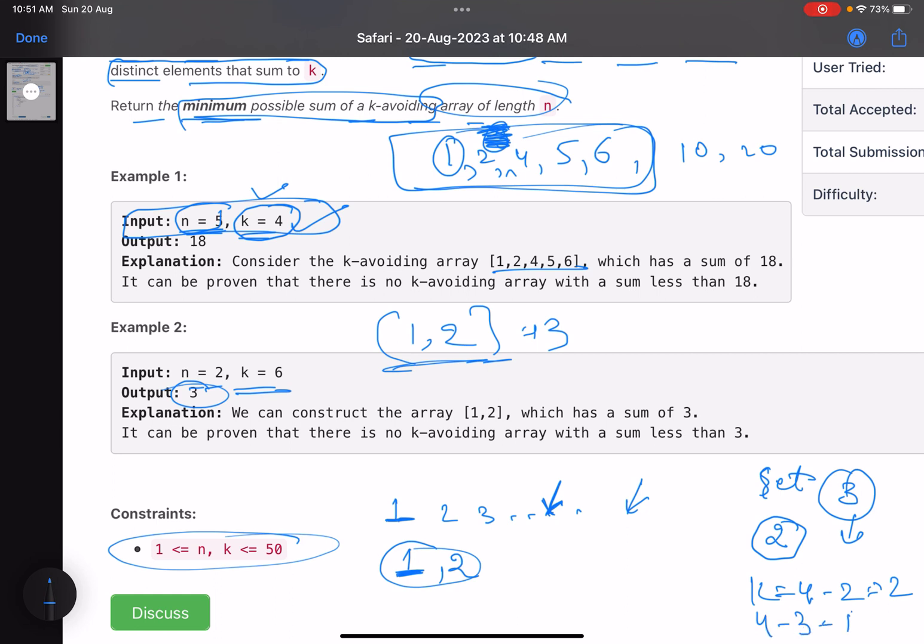Then I come to 3. Will inserting 3 violate the condition? Let's check: k is equals to 4, 4 minus 3 equals 1. 1 is already present. I am trying to insert 3, if its corresponding pair is present I should not insert it, so I cannot insert 3. I come to 4, its corresponding pair is 0, that's not present, you can include it. Then 5 you can insert it, then 6. The sum of these elements comes out to be 18.